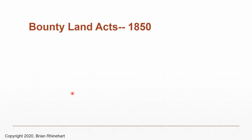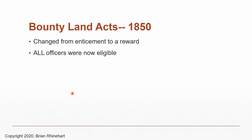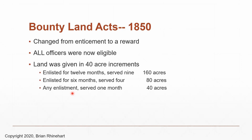Depending on how long you served, you were eligible for more bounty land. The minimum was one month of service, which would get you 40 acres. In 1852 they made a small change: every 20 miles traveled counted as one extra day of service. So Henry Stoner, who traveled 41 miles, could add two extra days to however long he served — which could make a difference if he was just a day or two short of the minimum. The widows and minor children could still apply, but not adult children.